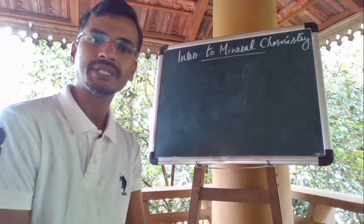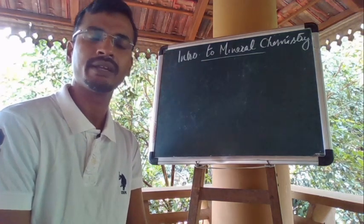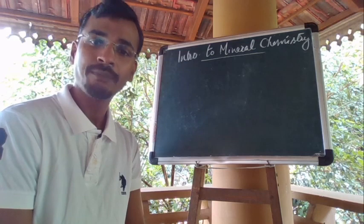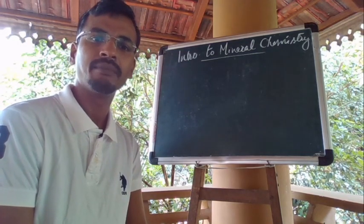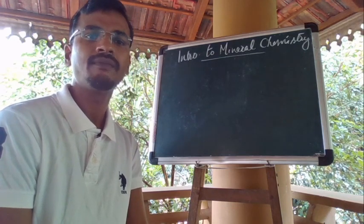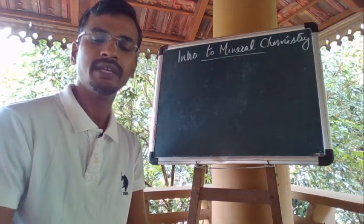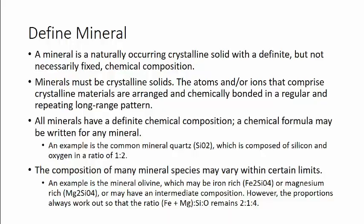Today we are going to discuss some basics of chemistry related to mineral chemistry. This will help us to discuss the mineral groups, their mineralogy, structure, chemistry, optical and physical properties in detail. So if you define a mineral, a mineral is a naturally occurring crystalline solid with a definite but not necessarily fixed chemical composition.